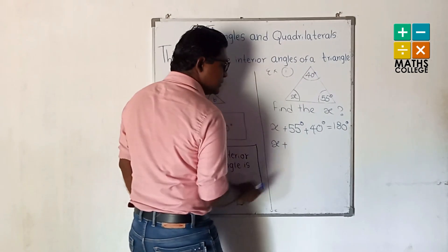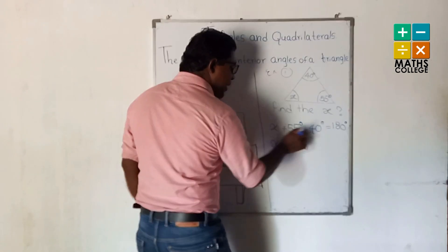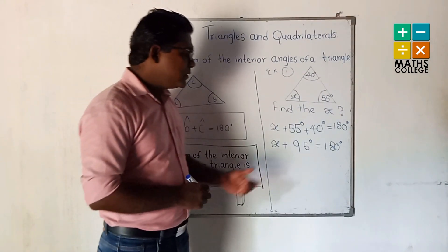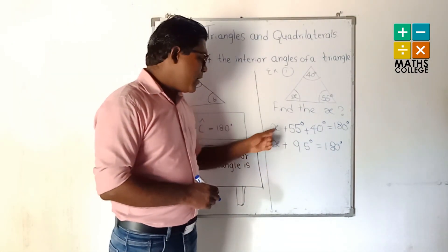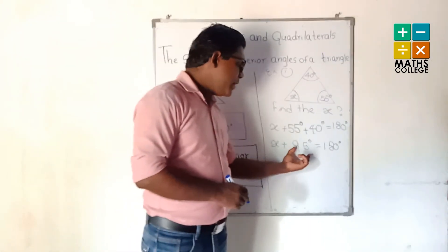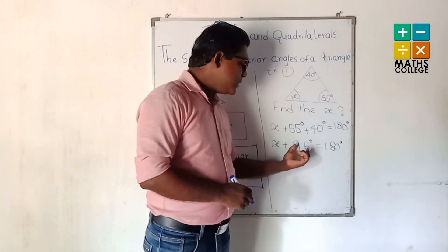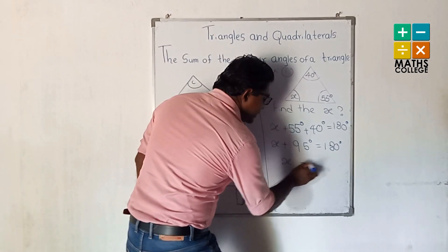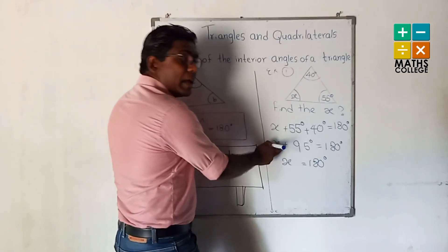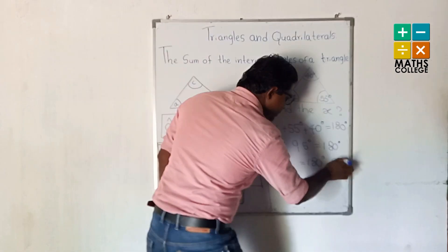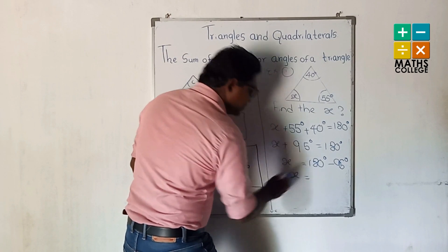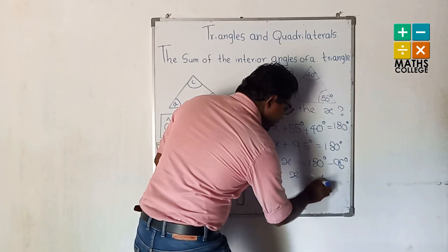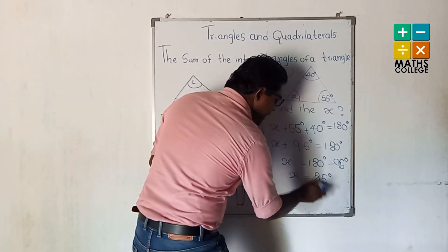x + 95 = 180. This is a simple equation. To find x, we remove 95 from this side by applying the opposite operation — plus goes to minus on the other side. So x = 180 − 95 = 85.